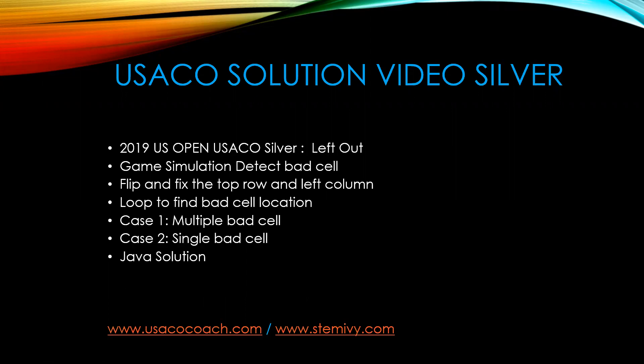Welcome to USACO solution video at silver level. This is a 2019 US Open USACO silver level problem called 'Left Out.' Today we'll spend about 10 minutes analyzing this problem. It is a game simulation problem. The technique involves window flip — fix the top row and the left column — then use a loop to find the bad cell location, categorize it into different cases, and find the best cells. At the end, we'll write the code in Java and submit to the website.